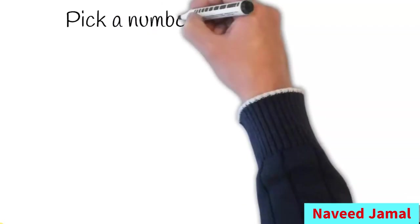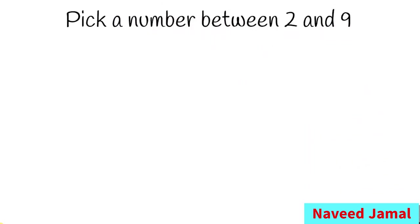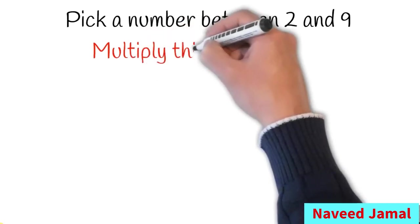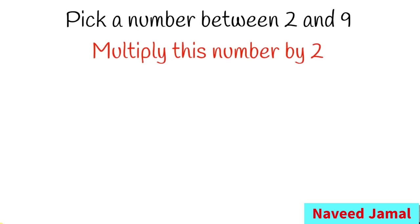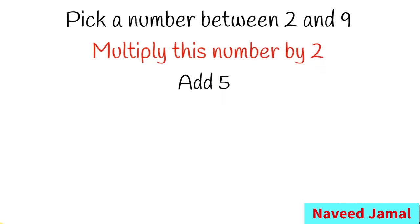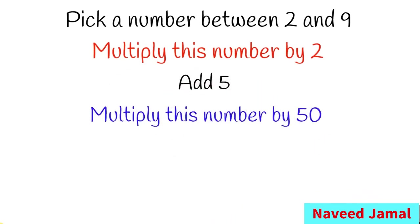Pick a number between two and nine. Between two and nine — multiply this number by two. Next, add five. Next, multiply this number by 50.